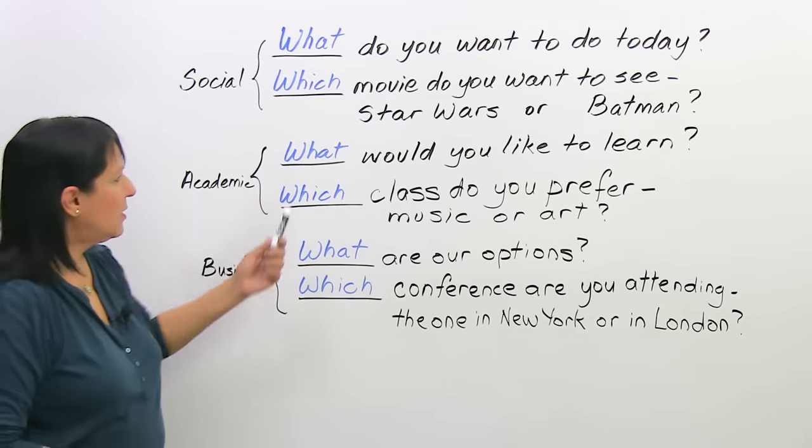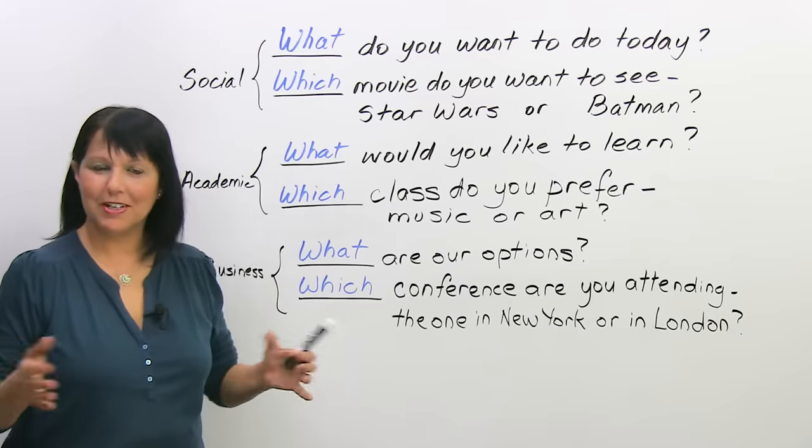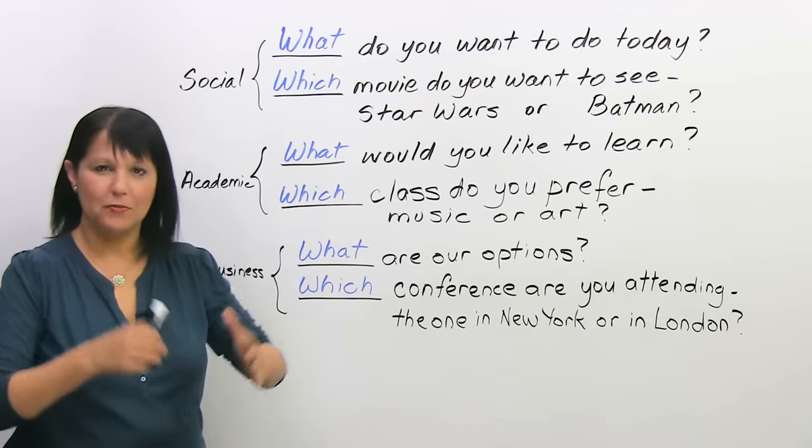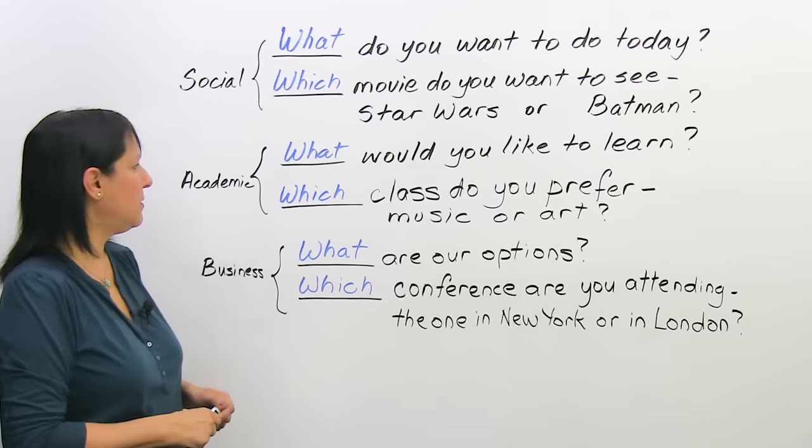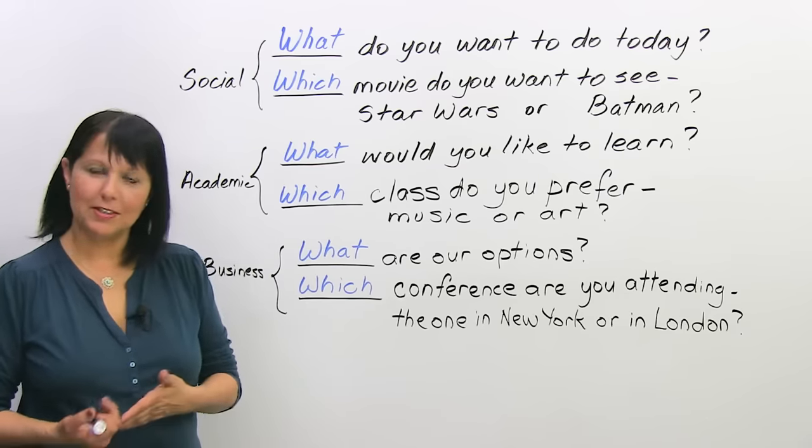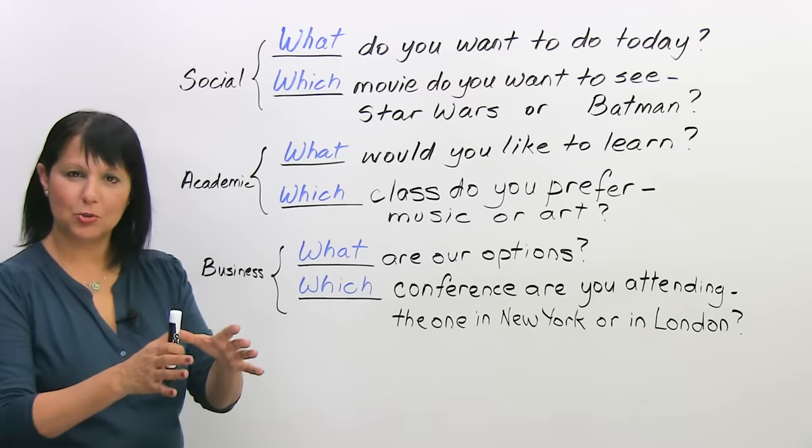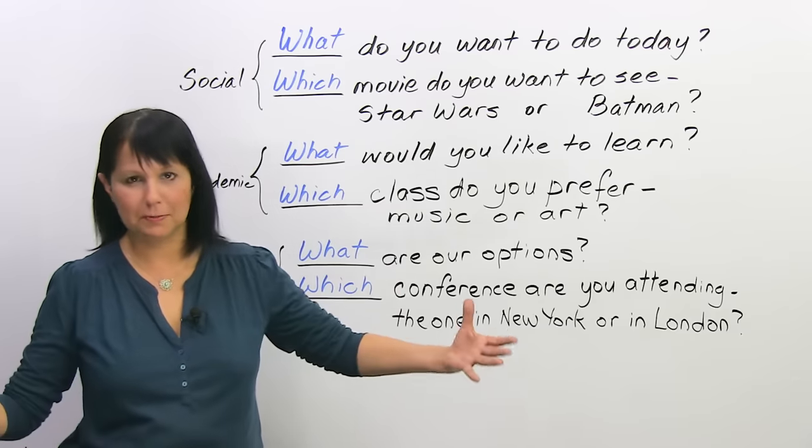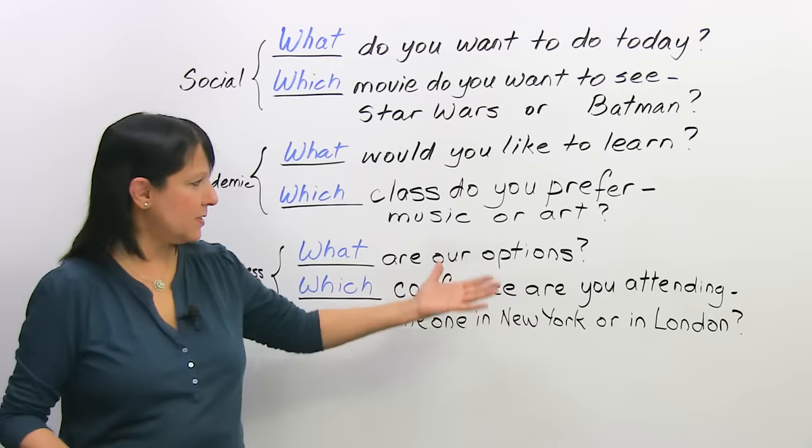Academically, we could ask someone 'what would you like to learn?' Out of all the subjects in the world, what would you like to learn? So very general, very broad. Or, 'which class do you prefer, music or art?' Now, of course, again, our choice is very limited, between two. Again, a choice might be between more, but here it's two.